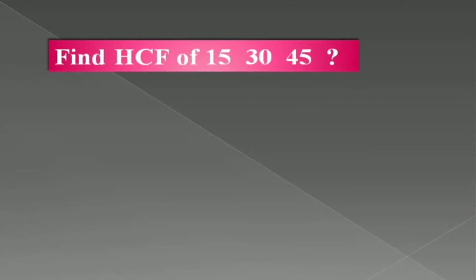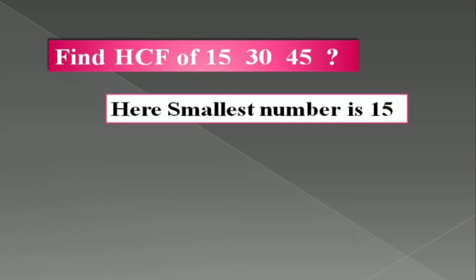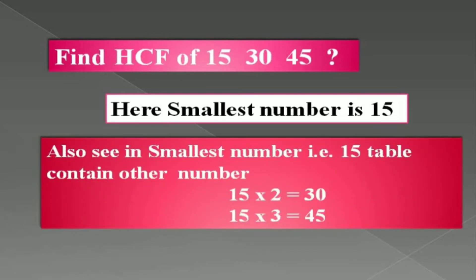Let us consider one example: find the Highest Common Factor of 15, 30, and 45. The simple thing is we have to use one trick. The smallest number here is 15. In that smallest number, we have to verify whether the 15 times table contains the other numbers — that is 30 and 45.